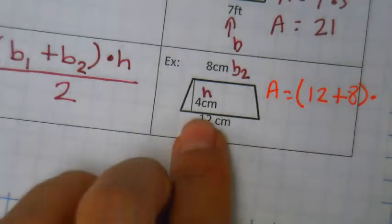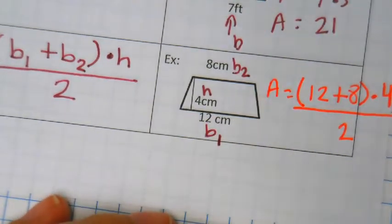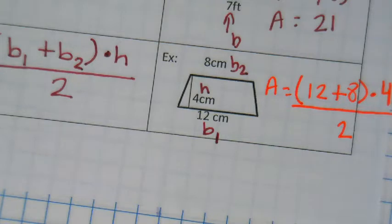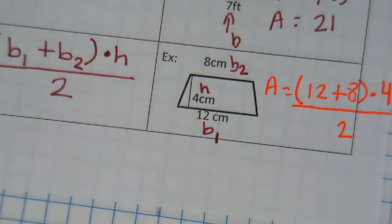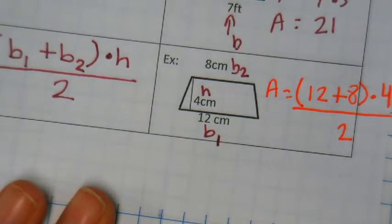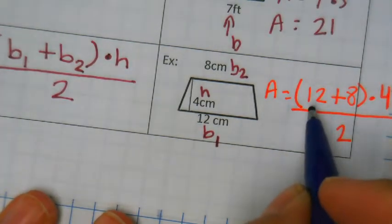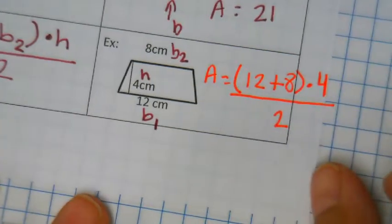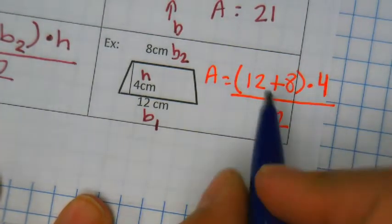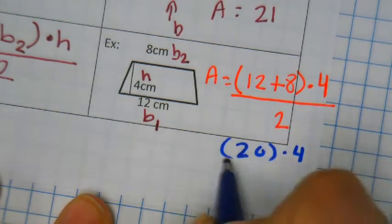Your height is 4. So we're going to do what's inside the parentheses first — 12 plus 8 gives you 20, times 4, divided by 2. So write that down. Then we're going to do 20 times 4. You have four $20 bills — how much money do you have? 80. Then your mom says give me half, so divide by 2. What's 80 divided by 2? 40. So our area is equal to 40 centimeters squared.